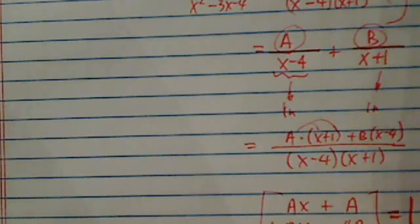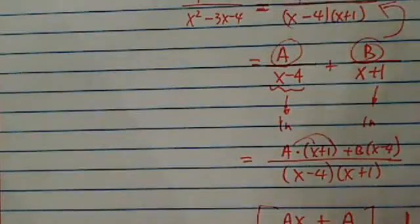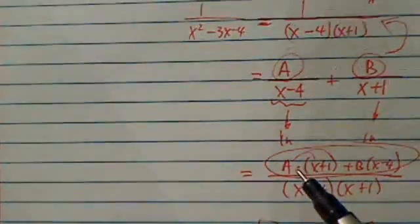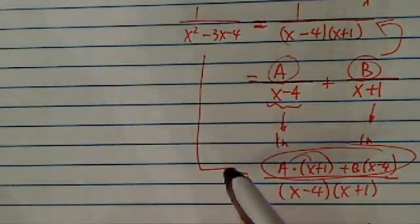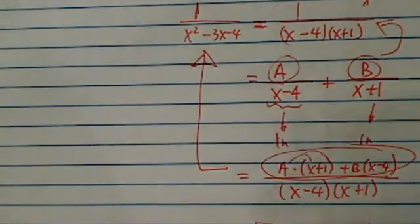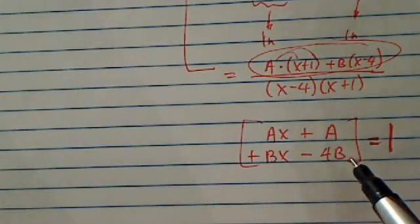So basically, left-hand side equal to right-hand side. So back over here, when we distributed this one out, this thing has to equal to this one here. And the numerator is only 1. So we end up with two equations and two unknowns.